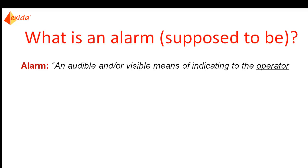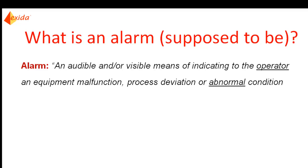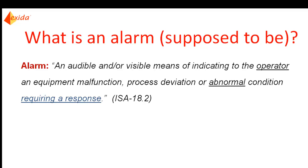Therefore, all of the information in the alarm system must be easily understood, useful, and actionable to the operator. An alarm should also indicate an equipment malfunction, process deviation, or abnormal condition, which means that something is wrong. Alarms should not be used for expected conditions or events. And last but not least, an alarm requires a response.